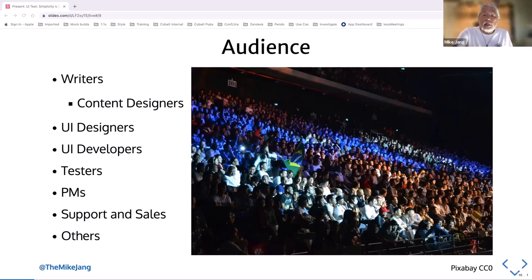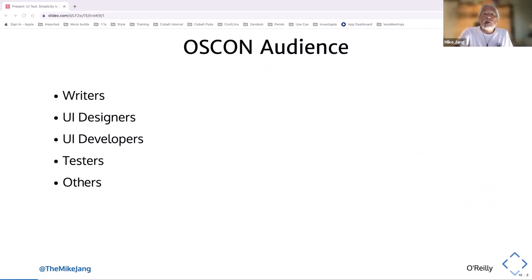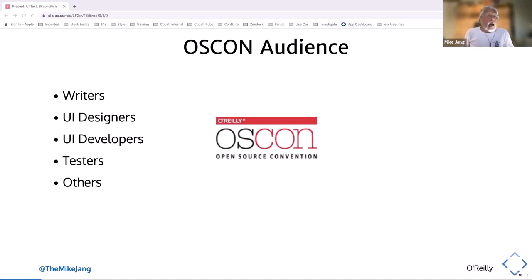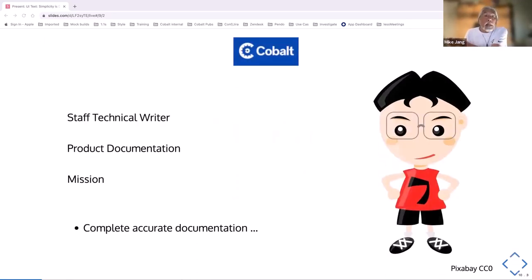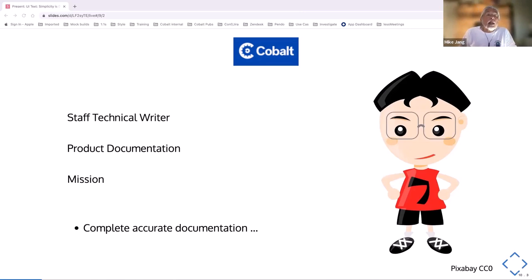I gave this talk at the open source convention back in 2017, and at that point I was the only tech writer in the room — so when you think about UI text, you have to realize everybody's interested. Today I'm a staff technical writer for a company called Cobalt. We do penetration testing as a service. I created their first product documentation, and part of my mission as a tech writer is to create complete, accurate documentation — dot dot dot. That'll become clear shortly.